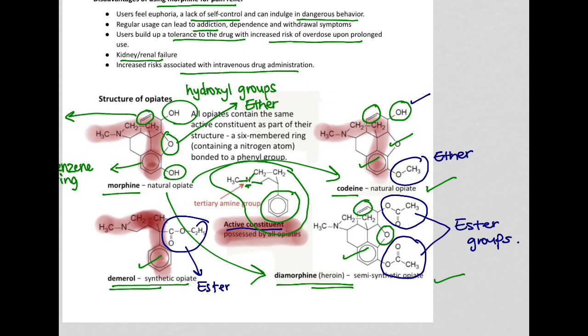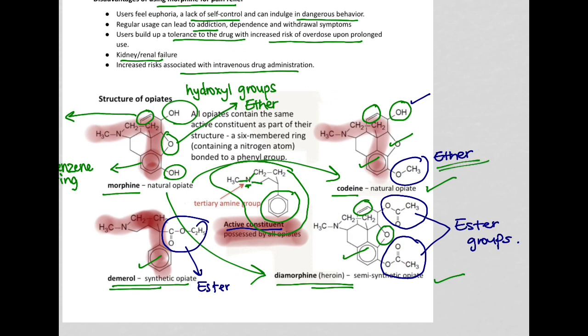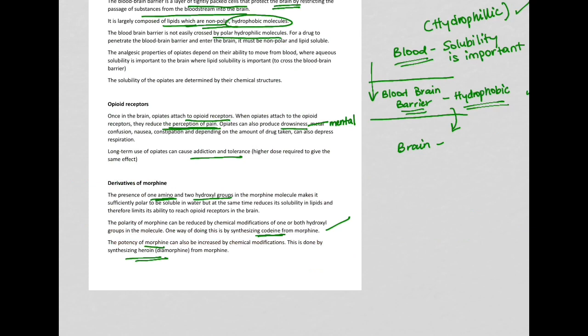If you look at codeine, codeine has an ether group rather than a hydroxyl group. And if you look at heroine, it has two ester groups in comparison to two hydroxyl groups. This makes a difference in how the drug is going to react in the body.